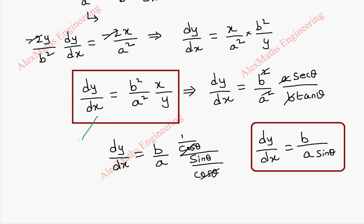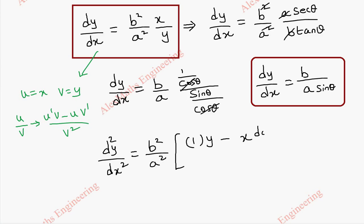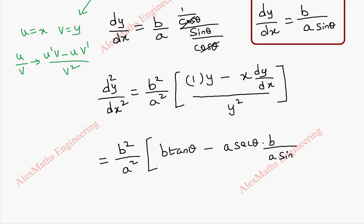Now from this we are going to find the second derivative, where u = x, v = y, and using the u/v method: (u'v − uv') / v². So when we differentiate, we get the second derivative d²y/dx². We keep the constant b²/a² separately. u' which is 1 times y minus u times v' which is the differentiation of y, (dy/dx), all divided by y². We can cancel minus 2.